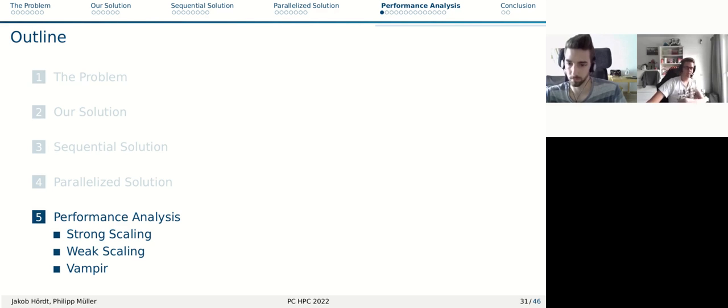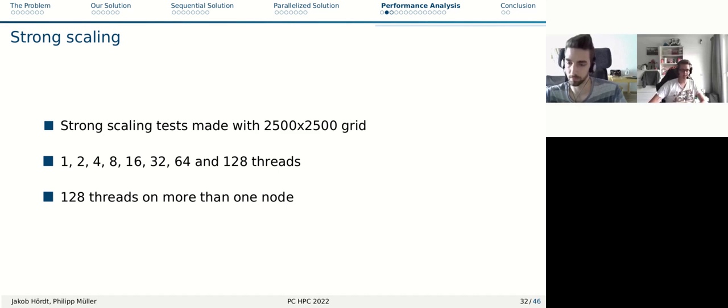Performance analysis. First, we've made our strong scaling test and we made that with 2,500 times 2,500 grid. We used 1, 2, 4, 8, 16, 32, 64 and 128 threads for the test to compare those. It is important to note that only 128 threads are on more than one node. We made it on four nodes with 32 threads each.